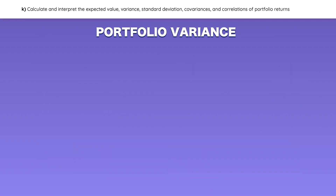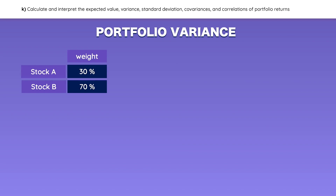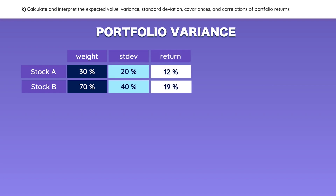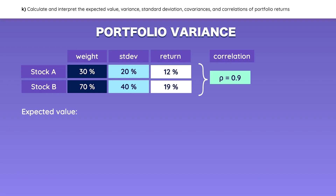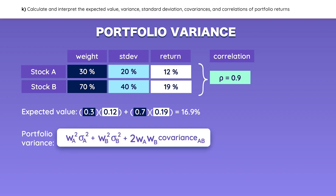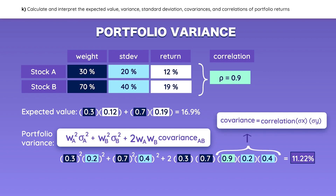Now let's shift focus to portfolio returns and variance. Take a look at a portfolio with 30% invested in stock A and 70% invested in stock B. You are given each security's standard deviation, expected returns, and correlation coefficient. The portfolio's expected value is simply the weighted average of the returns. To calculate the portfolio variance, plug in the numbers into the formula. Be extra careful with the last component: the covariance was not given, but you can find it by multiplying the correlation by the standard deviations. If asked for portfolio standard deviation, take the square root of the variance.